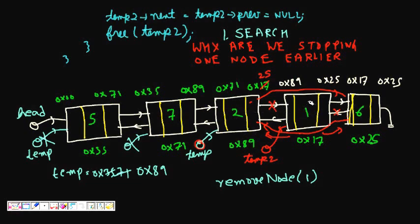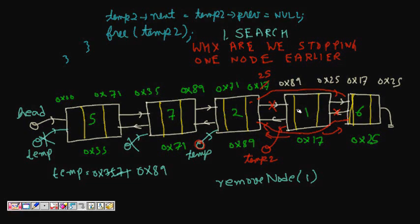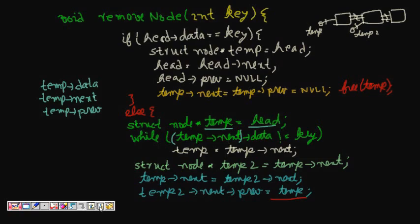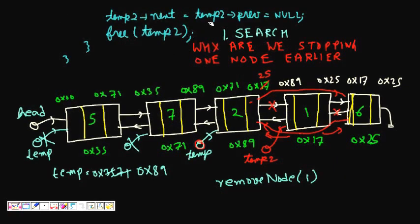Now we need to free the deleted node. We make temp2->prev = null and temp2->next = null, then we call free(temp2). This way we are able to remove node 1 from the doubly linked list.